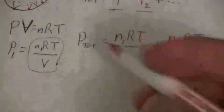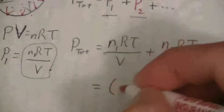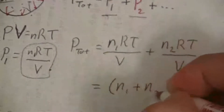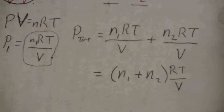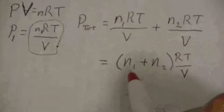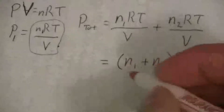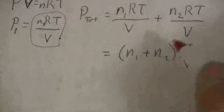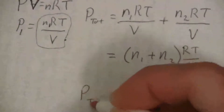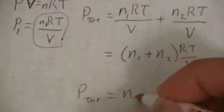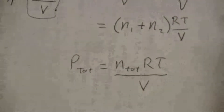If we simplify this, we can pull out the RT over V and write it as (N1 + N2) times RT over V. We can essentially call this the total number of moles — you add up all the moles from each of the different gases — so the total pressure is equal to the total moles times RT over V.